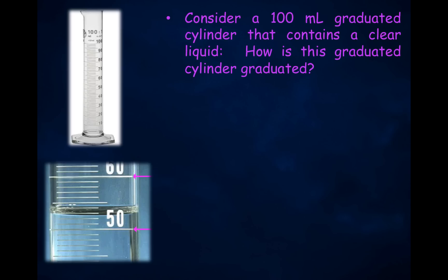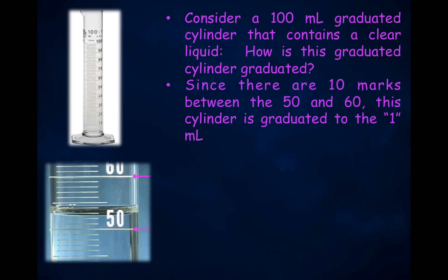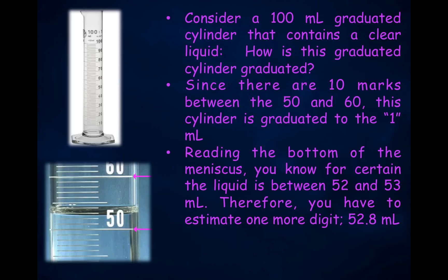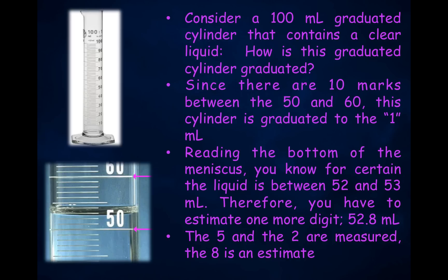Now let's consider this 100-milliliter graduated cylinder that contains a clear liquid. Since there are 10 marks between the 50 and 60-milliliter graduations, this cylinder is graduated to the 1 milliliter. Reading the bottom of the meniscus, you know for certain the liquid is somewhere between 52 and 53 milliliters. Therefore, you estimate one more digit. 52.8 milliliters is an appropriate measurement, as would be 52.7 or 52.9 milliliters. The 5 and the 2 are measured, and the last digit — the 8 — is an estimate.